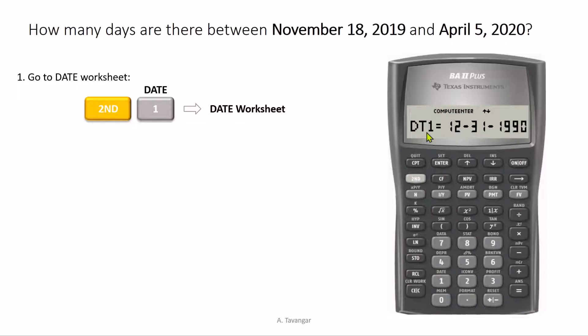DT1 represents the first date. In order to input the first date, which is in our problem November 18, 2019, we press the month first and then we separate the month from the rest of the date using a decimal point. November is the 11th month of the year,